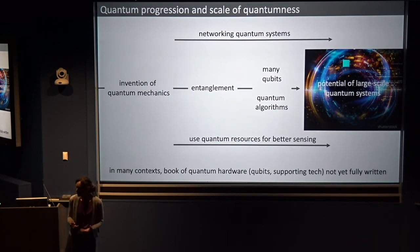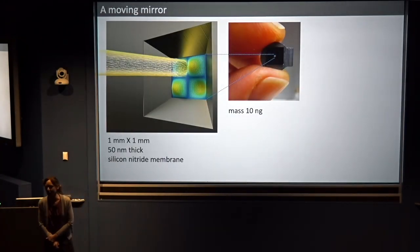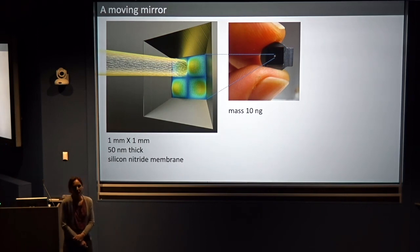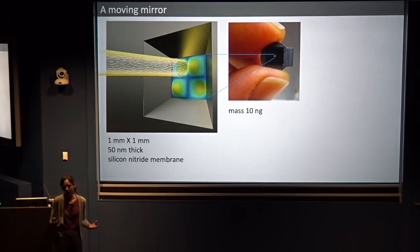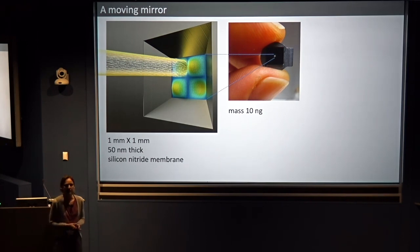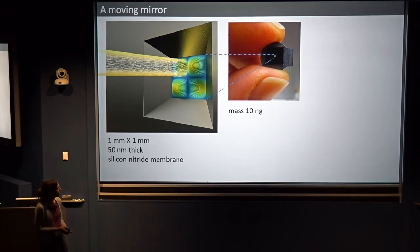In that spirit, today I'm going to talk about what I think of as a very niche quantum system, and the history of work we've done to bring these types of systems to the quantum regime. I'll start by showing a picture of the type of thing we work with in our lab in the context of these mechanical quantum systems. I called it a moving mirror in the title of this talk.